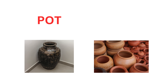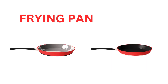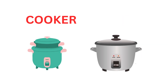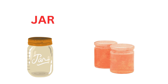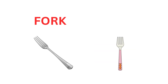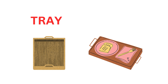Pot in Hindi is Matka. Frying pan in Hindi is Tawa. Cooker in Hindi is Kukar. Sieve in Hindi is Chalni. Jar in Hindi is Gagra. Fork in Hindi is Kata. Tray in Hindi is Kishti.